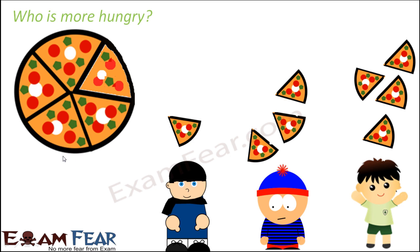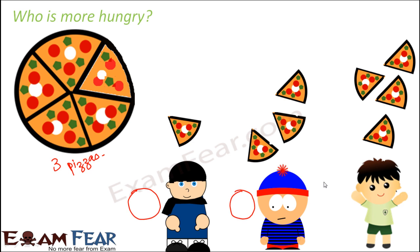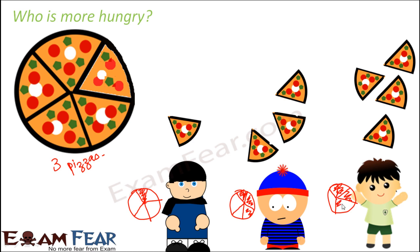You might be wondering how they get so many slices from 1 pizza. In this case, there are 3 people and you have 3 pizzas — one pizza given to each person. The first guy ate just 1 slice, the second ate 3 slices, and the third ate 4 slices from their respective pizzas.